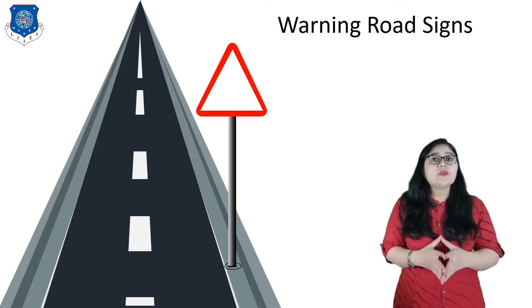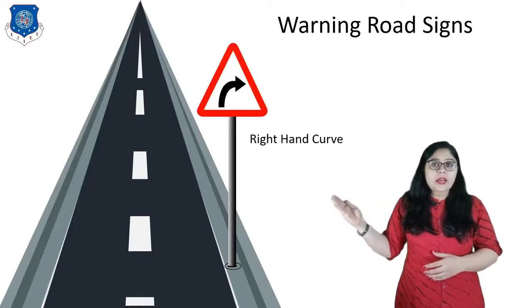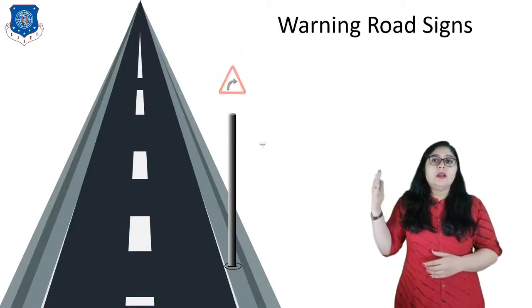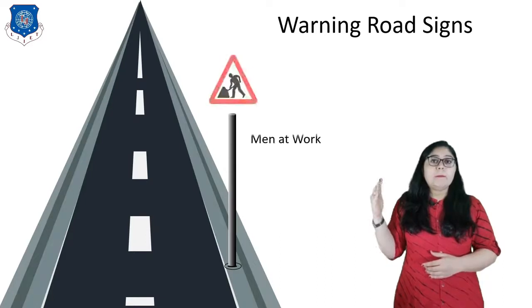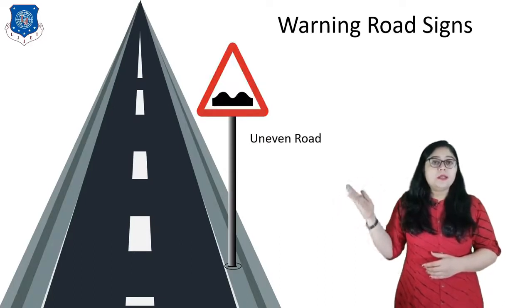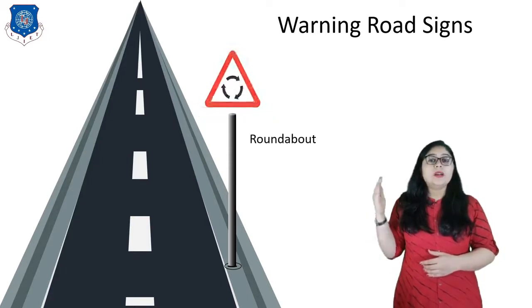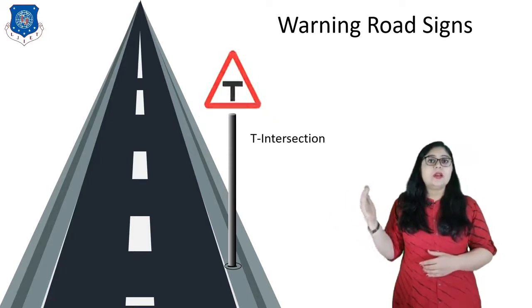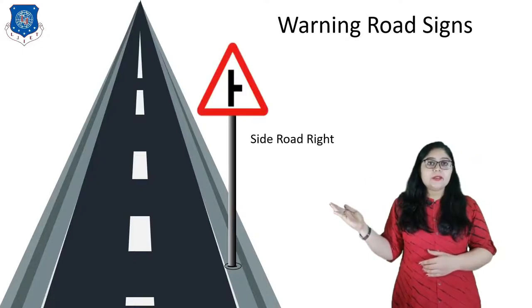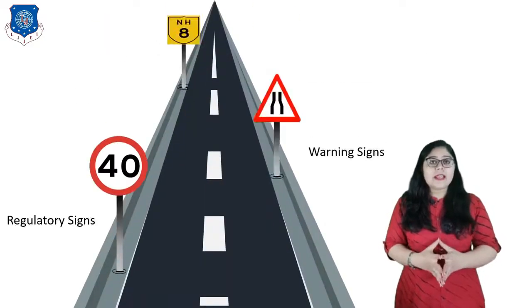Different types of warning signs include left hand curve, right hand curve, narrow bridge, man at work, uneven road, narrow road, roundabout, T intersection, side road, side road right, and cross road. Now the last type of traffic sign is informatory road signs.